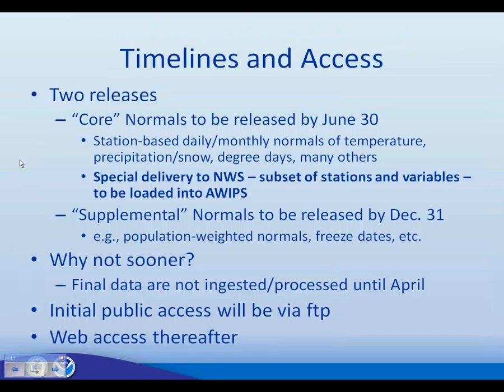Regarding timelines and access for the 1981–2010 normals, we plan to have two releases. For the last installment, we didn't release the first batch until October of 2001 — that was CLIM 81, the monthly temperature and precipitation normals — and then slowly rolled out new products over three years. This time we wanted to get out as much as possible by mid-2011, and everything else by December 31st. We call the normals we're trying to release by June 30th the core normals — everything we're providing to the National Weather Service to be uploaded into AWIPS.